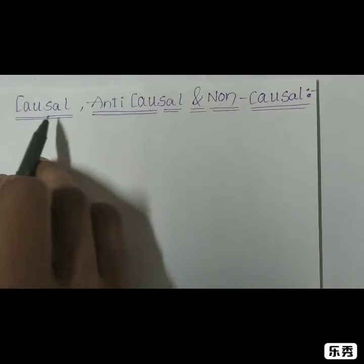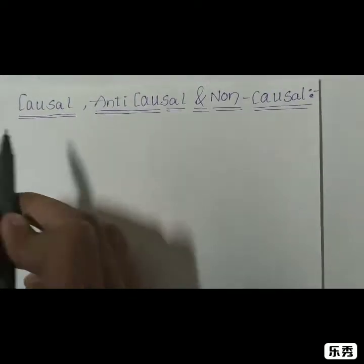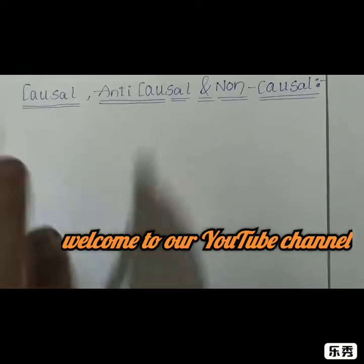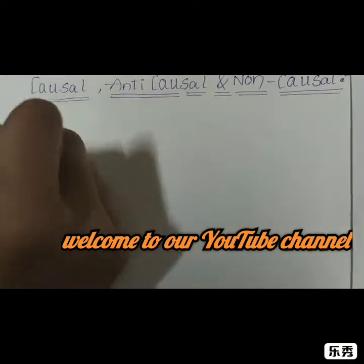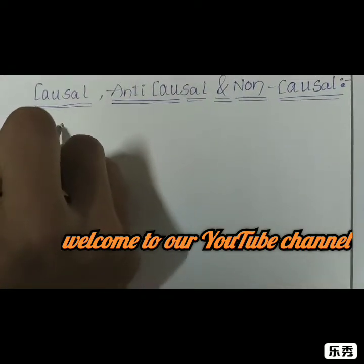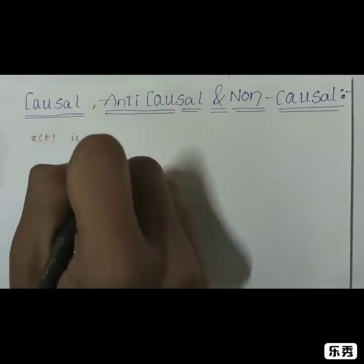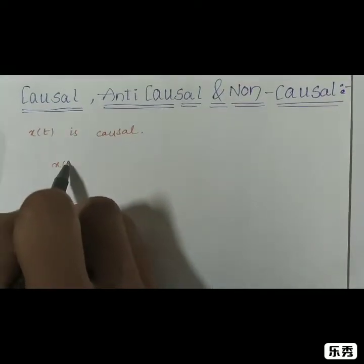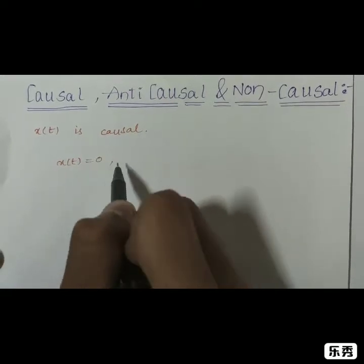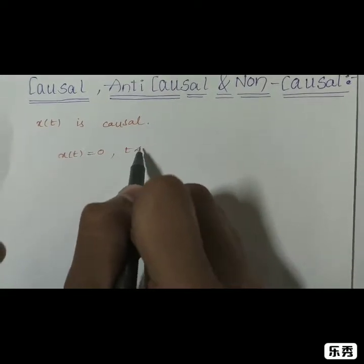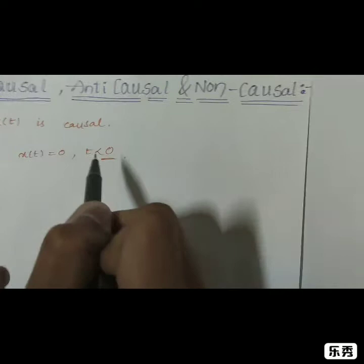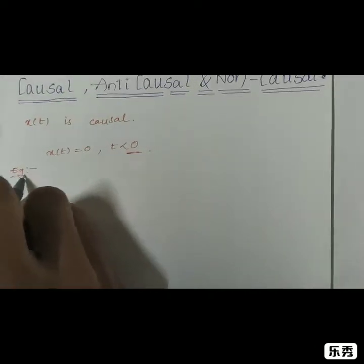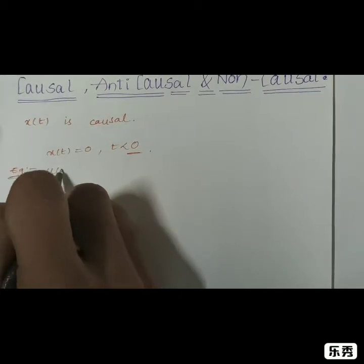A signal is said to be causal if it exists only for positive values of its independent variable. For example, if x(t) is causal, then x(t) equals 0 for all values of t less than 0. An example of a causal signal is the unit step function.